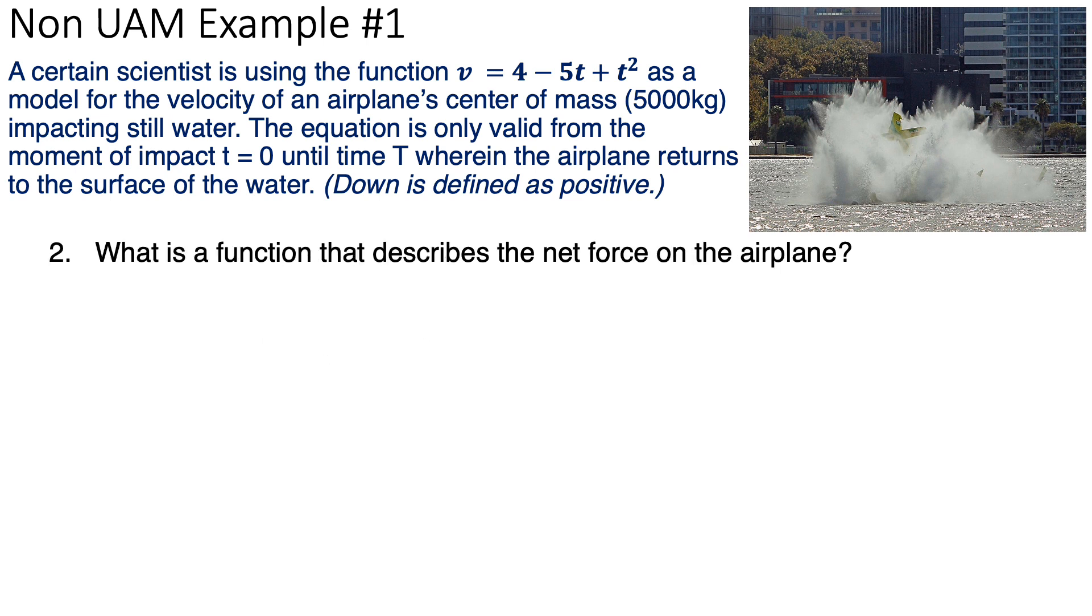Question two asks us to find the net force on the airplane. Net force is another way of saying sigma f. We're solving for sigma f as if it was one variable. Now, Newton's second law says that that equals to mA. I need to know the acceleration. But they gave us the velocity. Now, to get the acceleration equation, I'm going to take the derivative. Because the derivative of velocity is the acceleration. I derive the formula, use the power rule. And the 4 disappears. The t becomes negative 5. And the t squared becomes positive 2t. That's the power rule.